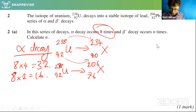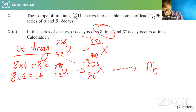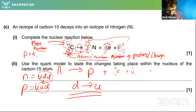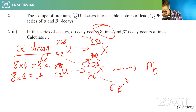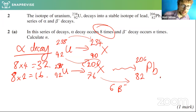Now we want to find the number of beta decays to get from atomic number 76 to 82. Each beta minus decay adds a proton — we saw this in the previous section where a neutron becomes a proton, taking us from six to seven. We want to keep the mass number constant and add to the atomic number. Six beta minus decays take us from 76 all the way up to 82, so n equals six.